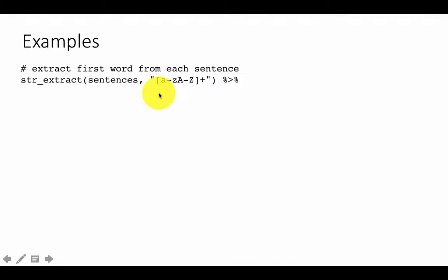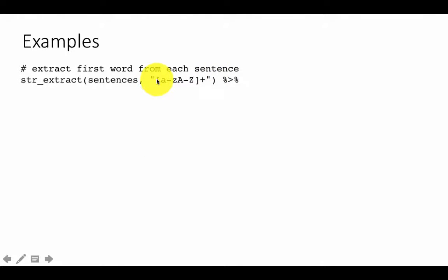We want to extract the first word, but we don't really need to use the caret anchor that marks the start of the string, because in any case it's going to start with the characters. If it begins with a bunch of white spaces, it will simply ignore those and start from where the first letters begin.